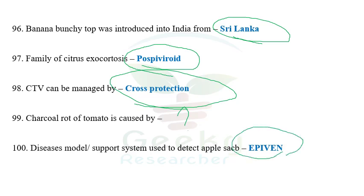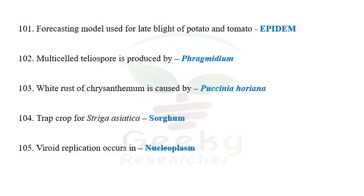The next question: the disease model or decision support system used to detect apple scab — EpiWhen is used to detect apple scab. Mills rules are applicable for apple scab, whereas Dutch rules and Van Everdingen rules are applicable for late blight of potato. The next question: the forecasting model used for early blight of potato and tomato is EPIDEM.